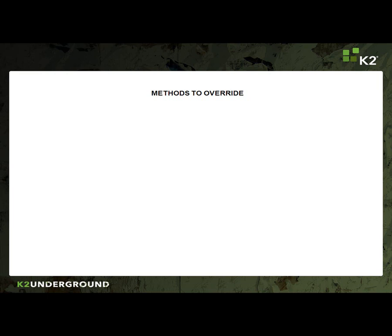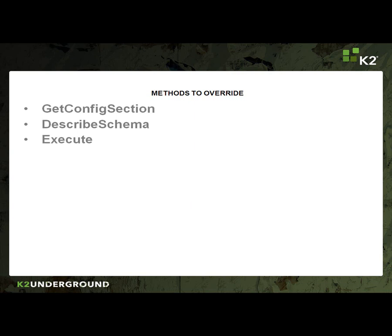As we said before, we have methods that need to be overridden to complete this service. They are: the get config section, which will describe configuration parameters required by the service such as server name, user name, and port number; describe schema, which will provide a name and description for the service, describe the service objects managed by the service, and describe the properties and methods of each service object; the execute method, which calls the source system's API or executes statements against the database; and extend, which allows the dynamic creation or definition of a service object if the back end system supports it.